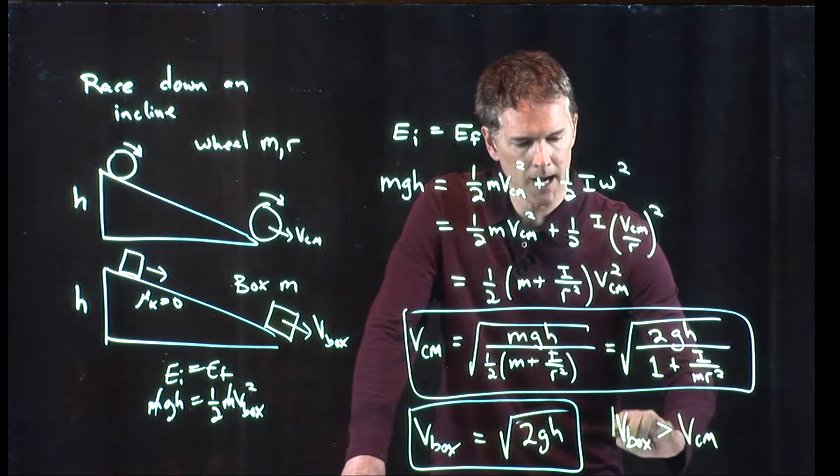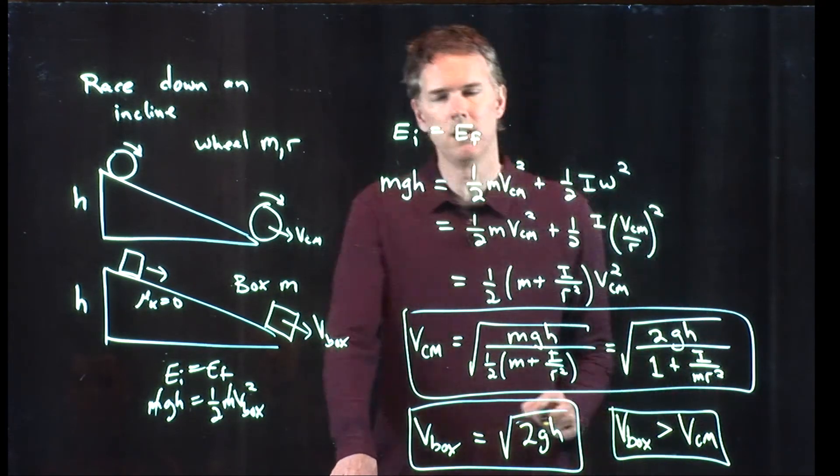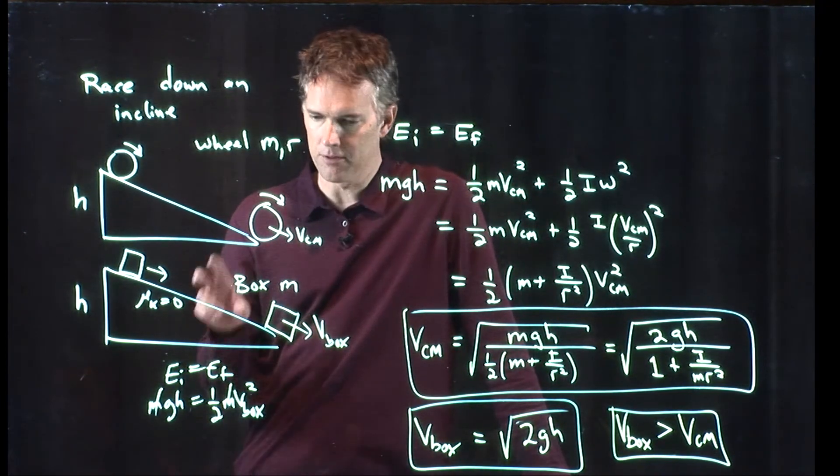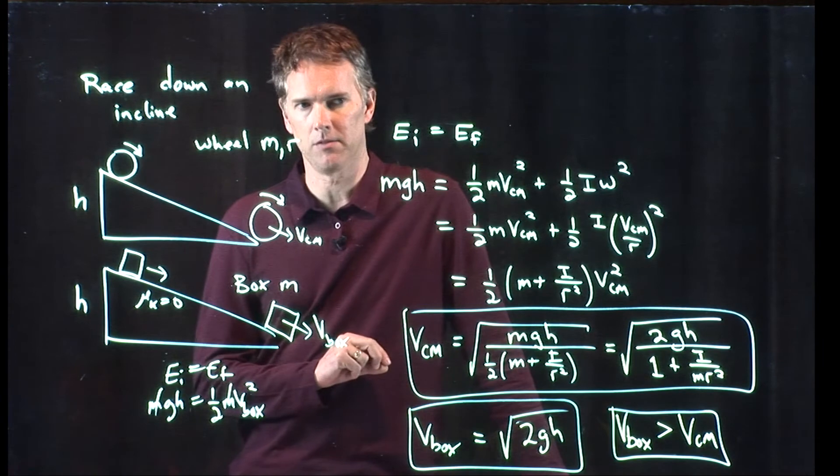Then we get the box has a bigger speed than the wheel, and therefore it gets there first. It gets there first, and it's going faster when it gets to the bottom.